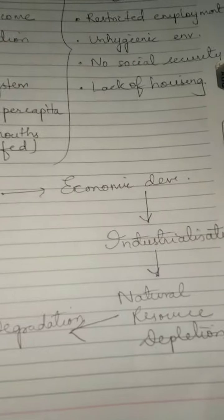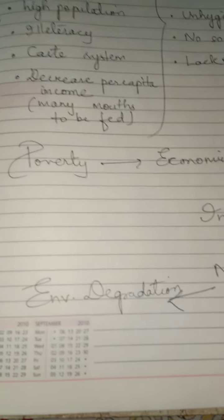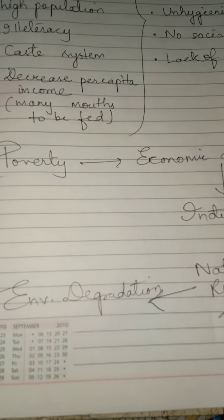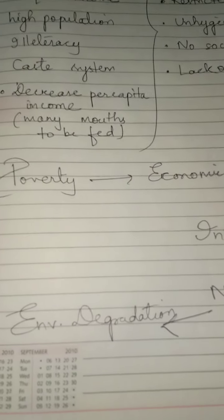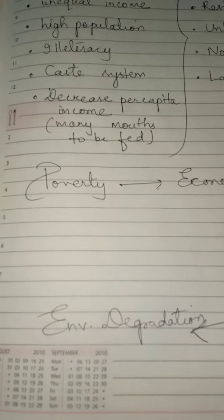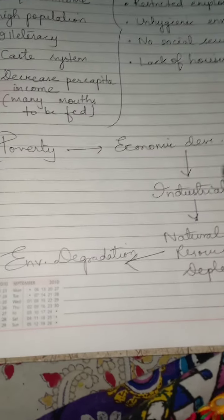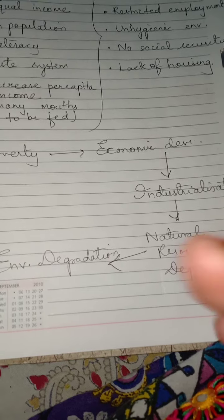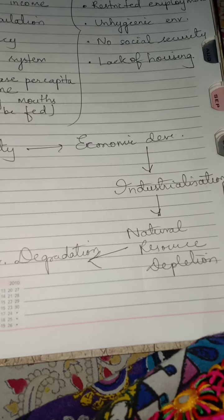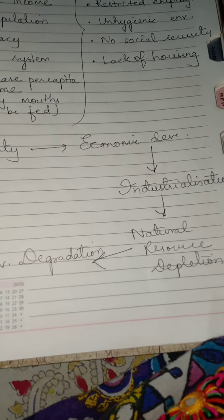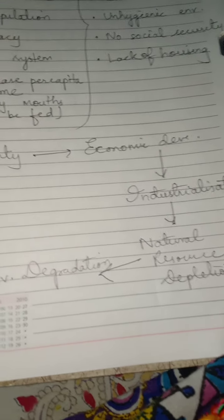Poverty is related to environmental degradation. To remove poverty, you need money and job opportunities, which requires economic development — a huge amount of money equally distributed among the poorest sections so they can afford basic needs like clothing, shelter, housing, education, and health care. Economic development requires industrialization, which needs more workers.